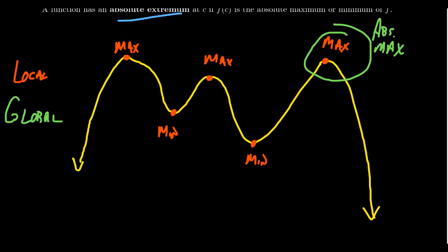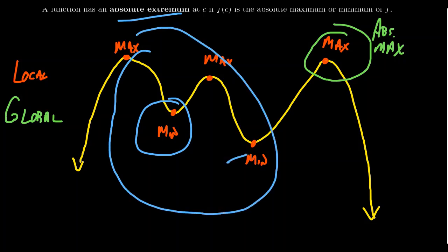The same thing can be said with minima here. This is a local minimum because there is a neighborhood for which it is the smallest. This is a local minimum because there is a neighborhood where it's the smallest. This point right here is not an absolute minimum because if we draw a large enough neighborhood, we can find a point that's even smaller.